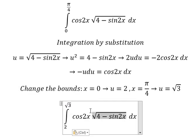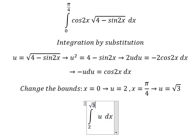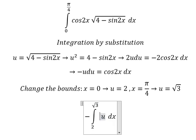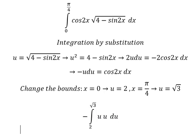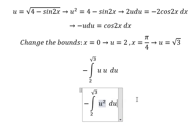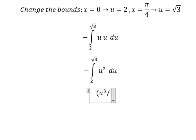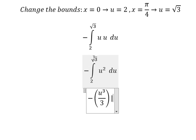The square root of three — this one is u, and cosine two x dx is replaced by this substitution. We integrate u to the power of three over three, with bounds from two to the square root of three.